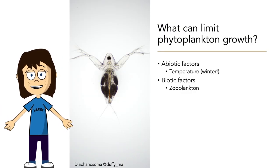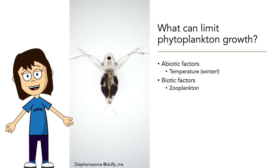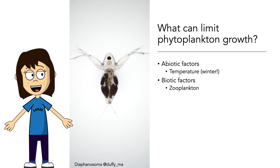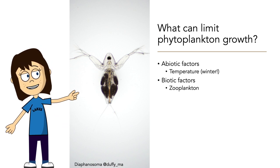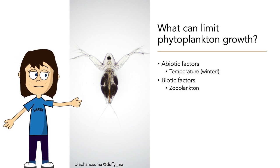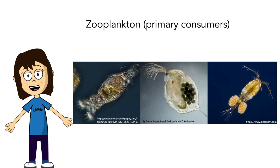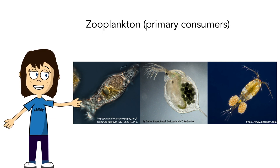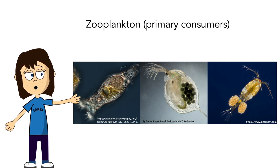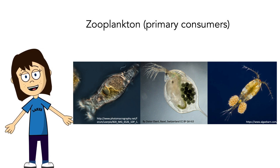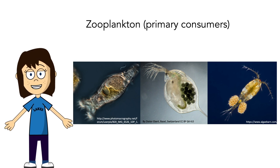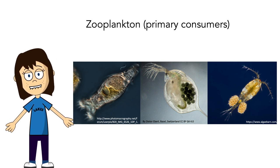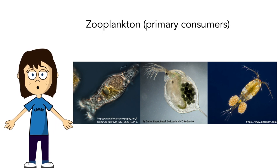So what can limit phytoplankton growth? It can be limited by abiotic factors such as temperature — we don't have as many phytoplankton growing in winter as in summer. But there's also biotic factors: those top-down controls, specifically predation. In this case, phytoplankton growth can be limited by zooplankton. Zooplankton are the animal component of the planktonic community — the word 'zoo' comes from the Greek word for animal. Zooplankton are heterotrophic, meaning they cannot produce their own food and must consume other plants or animals — specifically, they eat phytoplankton. They're generally larger than phytoplankton but still microscopic.